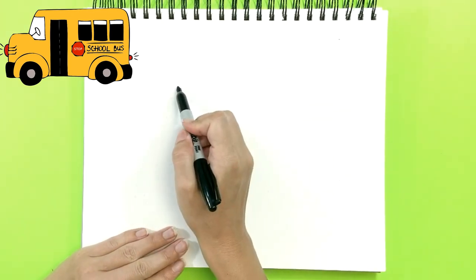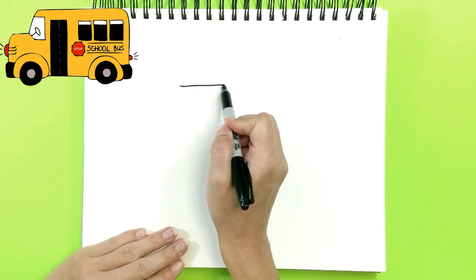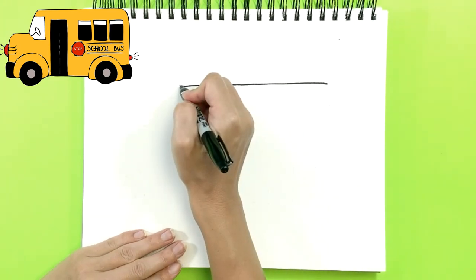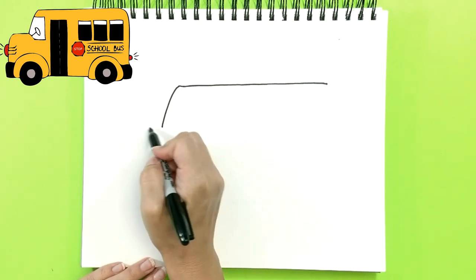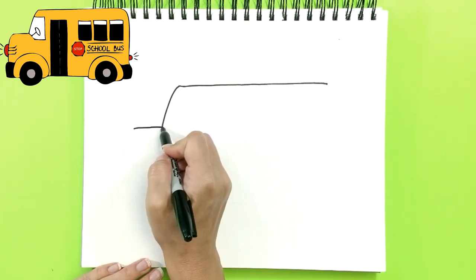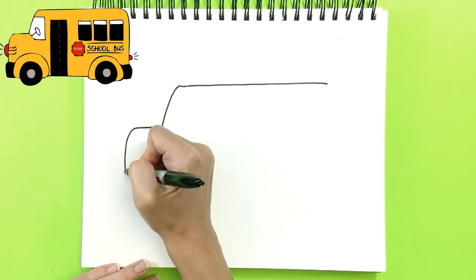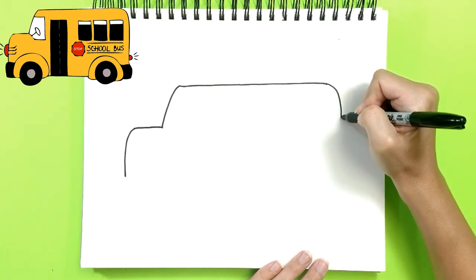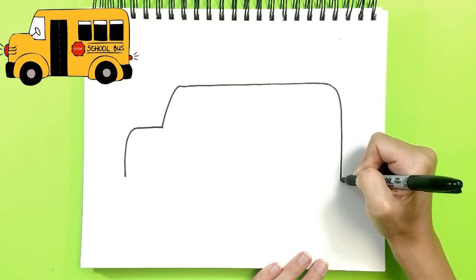Let's start from the top. Just put one long line for the roof. Put down on this side. One more one. Put down on this side. Let's draw the back. There you go.